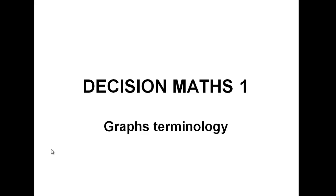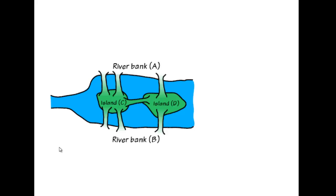The next topic in decision one involves what we call graphs. What we mean by a graph in decision maths is something like this. This is a graph showing exactly what's going on here, where we have two riverbanks, two islands and bridges connecting them. This graph explains how to travel between the points, and these points are each of the riverbanks A and B and the islands C and D.